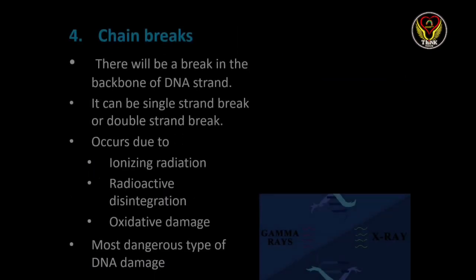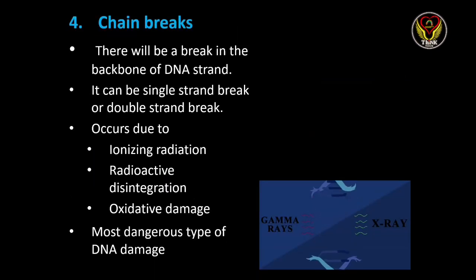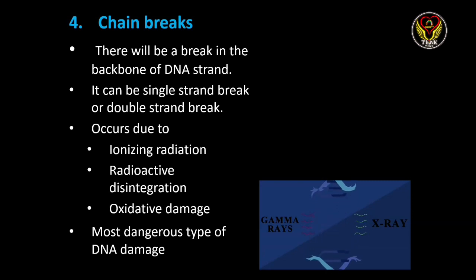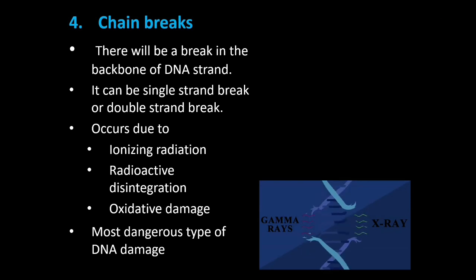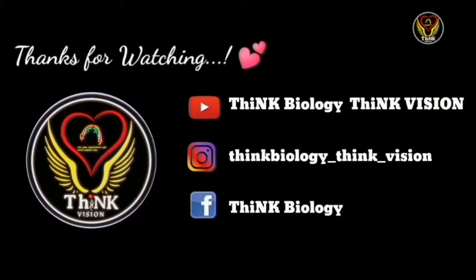The next major type of DNA damage is chain break, which takes place in the DNA strand's backbone. It can be a single strand break or a double strand break. Ionic radiations like X-rays, gamma rays, or radioactive disintegration, and even oxidative damage due to free radical production in the cells, can cause chain breakage in DNA. It is the most dangerous type of DNA damage because, as the DNA strands are completely broken, it is very difficult to repair. Thank you.